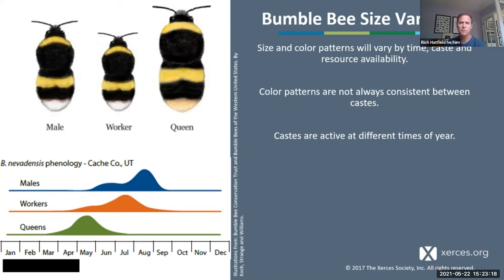In addition to color pattern differences, there are also size differences. There's a huge variation in worker size, and also a huge variation in male size, even within a species and even within a single colony. The first brood of workers that come out are often very, very small, and then later in the season those workers can be much bigger and more robust. Lots of differences to consider as we think about surveying for bumblebees.